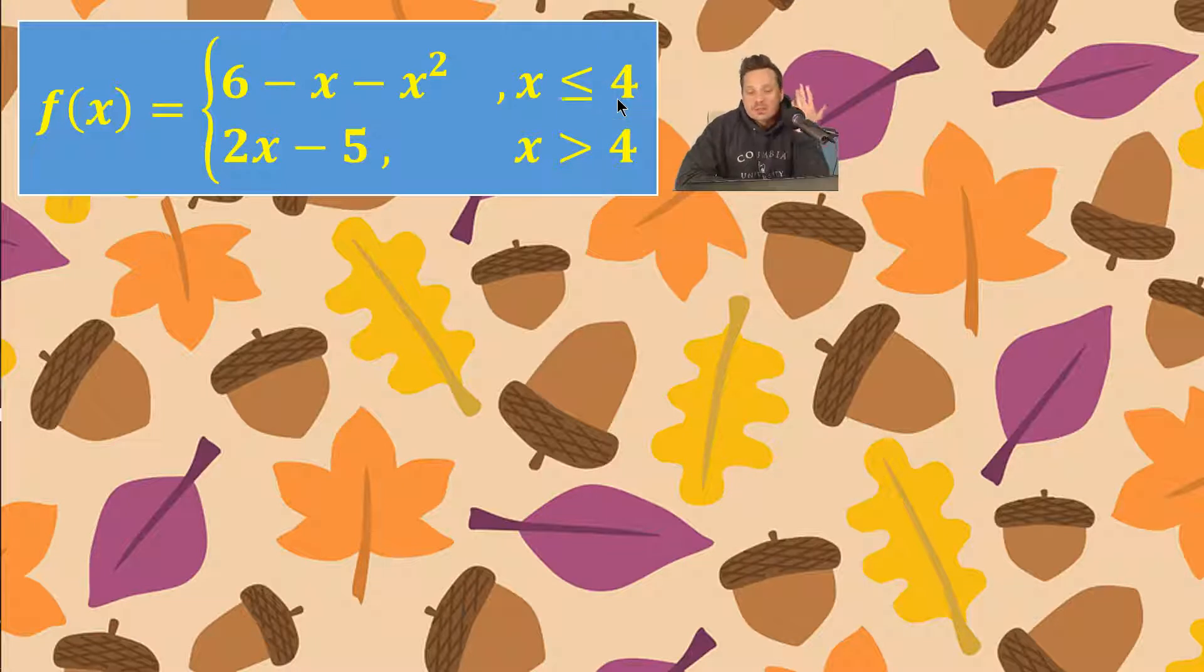For example, when x is like 3.99 you would use that one, or when it's 2 or negative 10 and so on. Any number less than or equal to 4 including 4 itself.